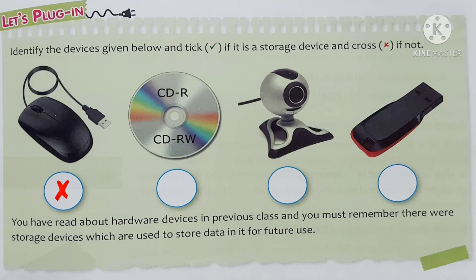CD is used to store data. Mark tick inside the circle. Next is the picture of a web camera. A web camera is a device connected to the computer for capturing still images and live videos. Web camera is an input device and it is not a storage device.